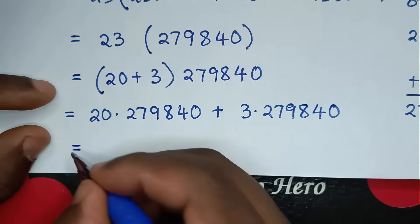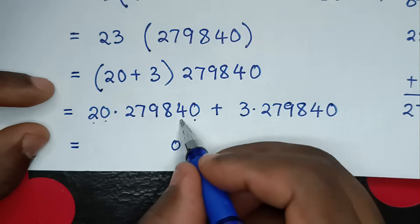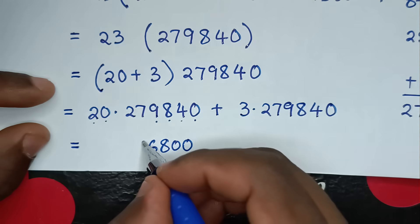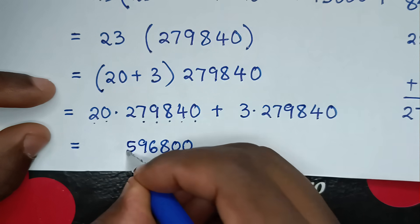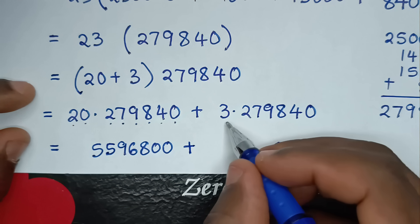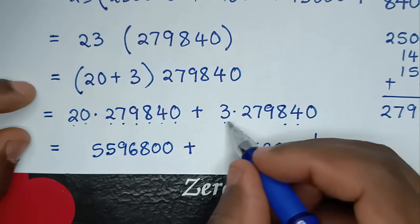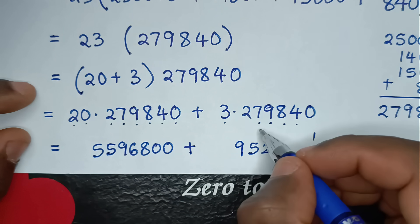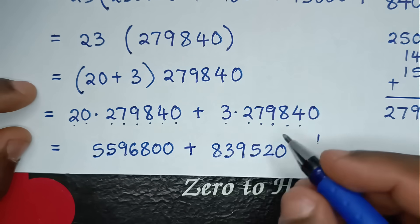Then here it will be equal to: we multiply 20 times 279,840 — so add two zeros — 2 times 4 is 8; 2 times 8 is 16 carry 1; 2 times 9 is 18 plus 1 is 19 carry 1; 2 times 7 is 14 plus 1 is 15 carry 1; 2 times 2 is 4 plus 1 is 5 — giving 5,596,800. Then plus 3 times 279,840: 3 times 4 is 12 carry 1; 3 times 8 is 24 plus 1 is 25 carry 2; 3 times 9 is 27 plus 2 is 29 carry 2; 3 times 7 is 21 plus 2 is 23 carry 2; 3 times 2 is 6 plus 2 is 8 — giving 839,520.